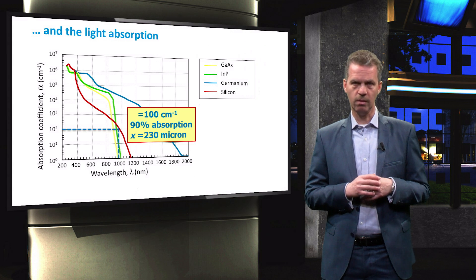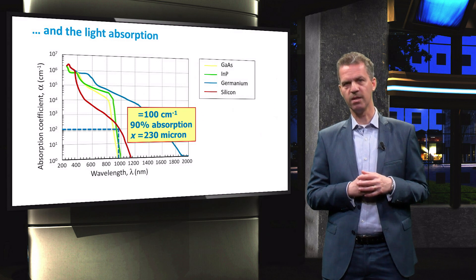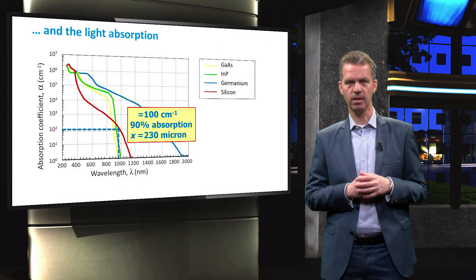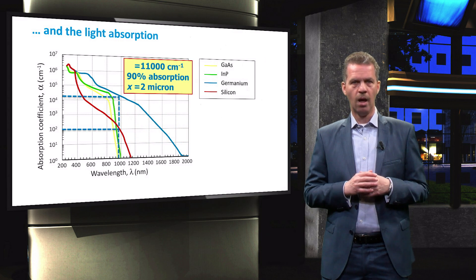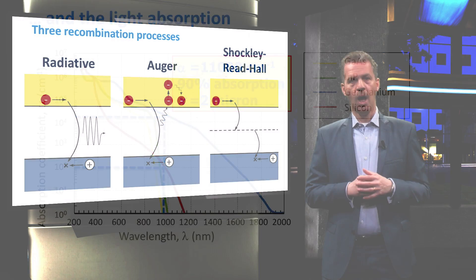This corresponds to a wavelength of 365 nanometers. As an example, the thickness of germanium, which is also an indirect bandgap material, only needs to be about 2 micrometers in order to absorb 90% of the incident photons at a wavelength of 1000 nanometers.